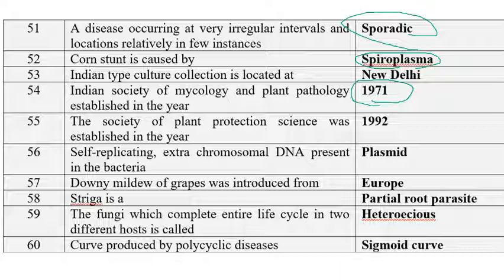A self-replicating extra-chromosomal DNA present in bacteria is called a plasmid. Plasmid is present in almost all plant pathogenic bacteria and other bacteria as well. It is a double-stranded structure and contains about 5% of DNA used for various purposes including antibiotic resistance. Downy mildew of grapes was introduced from Europe.